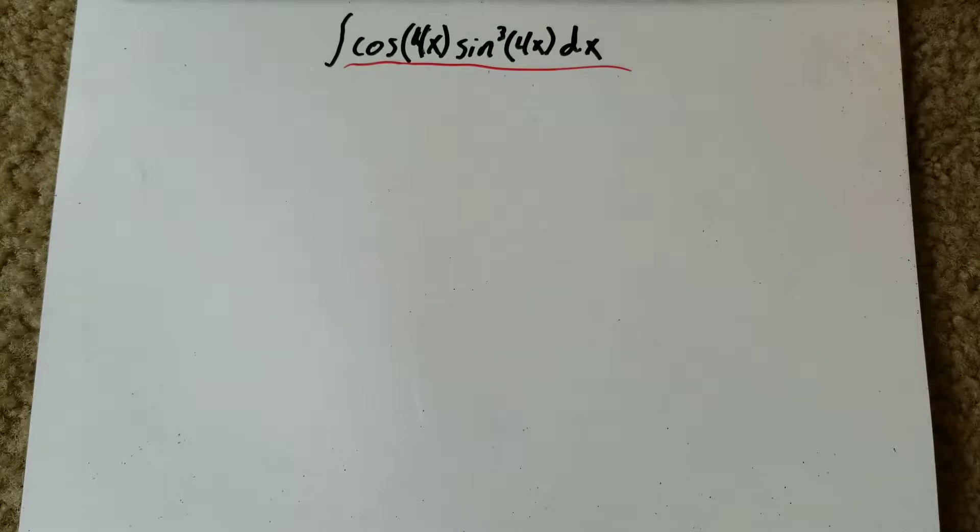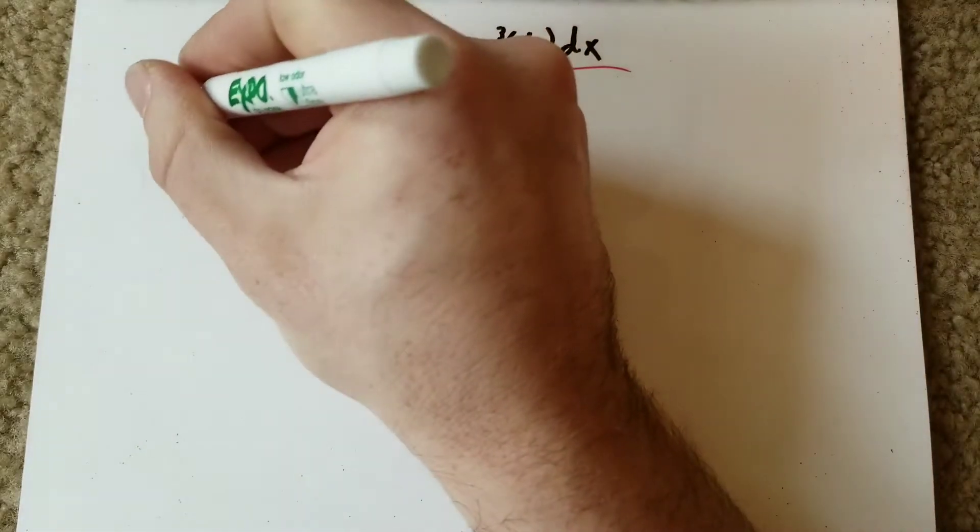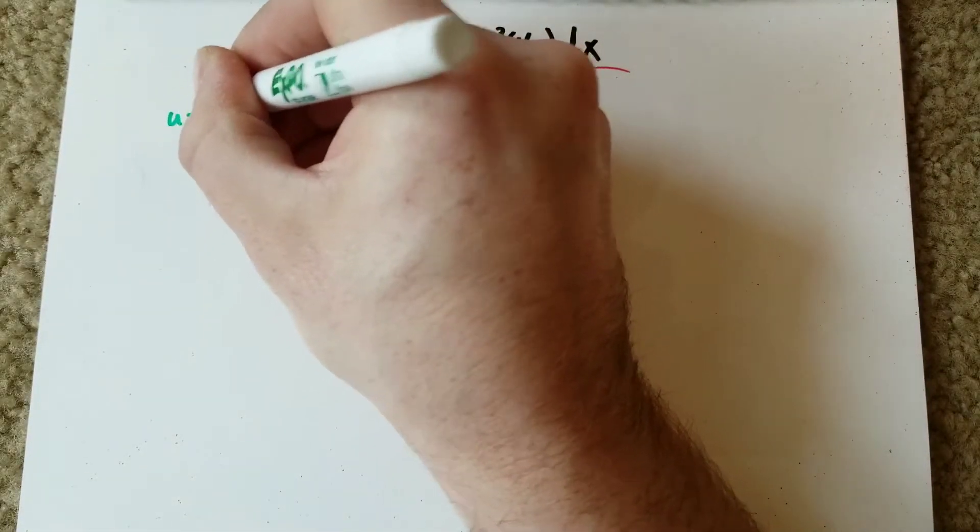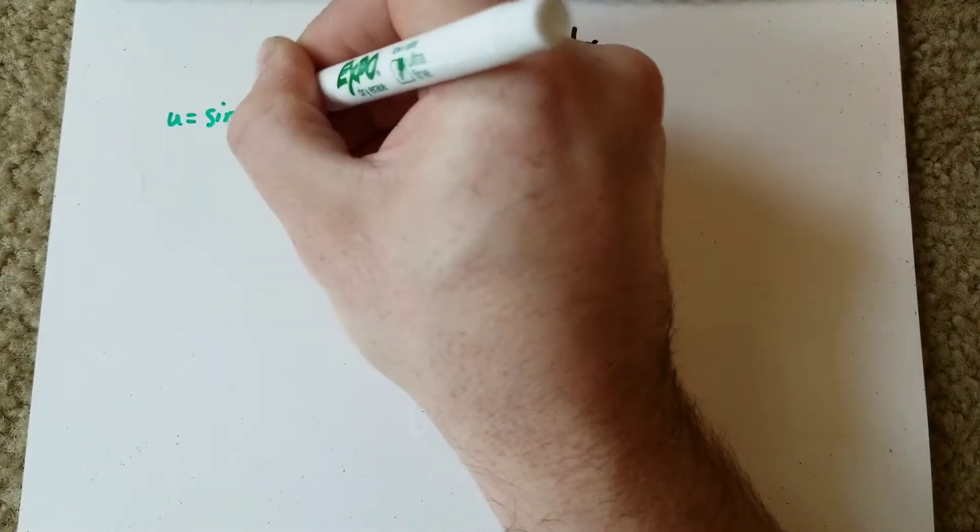So when you see this problem, you should automatically see that we need to do a u-substitution. But if we substituted cosine of 4x as u, we're not going to be able to cancel anything. It's not going to get us where we want to be, so we're going to make the u-substitution of sine of 4x. So u equals sine of 4x.